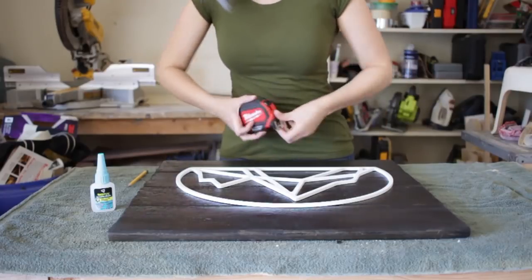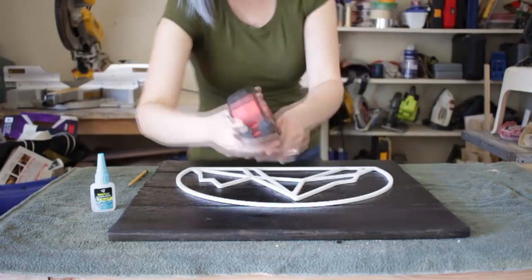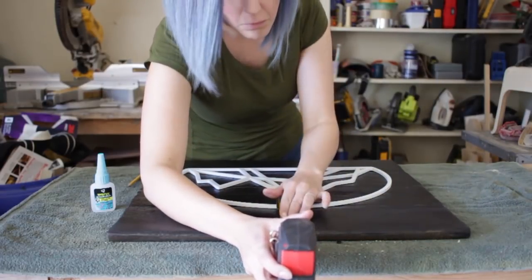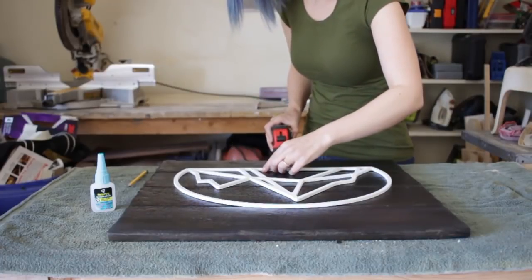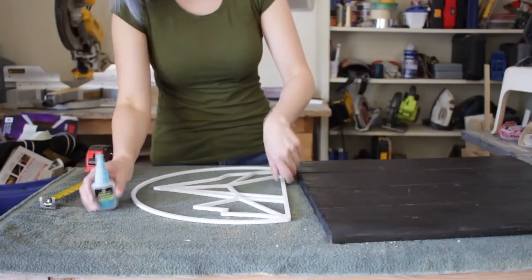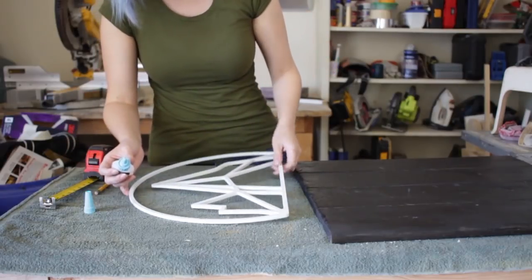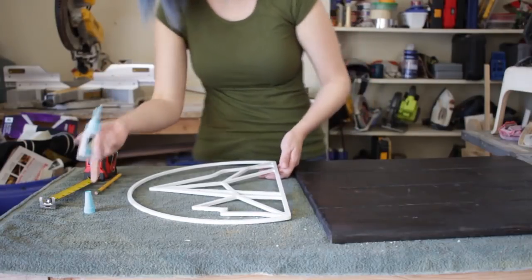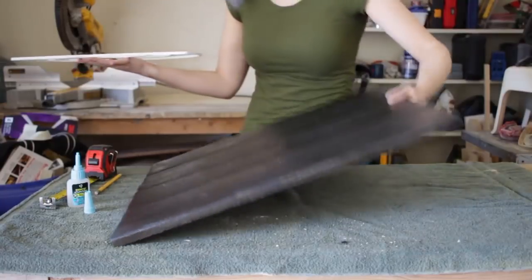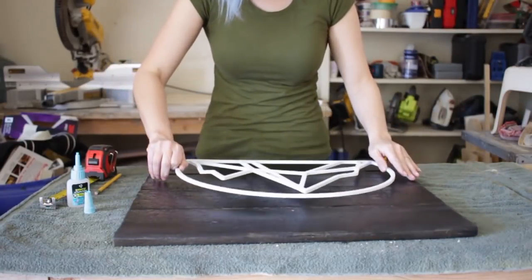With the panel flipped right side up, I started taking measurements so I could attach my mountain design. I wanted to make sure that it was in the center of the panel. I carefully applied RapidFuse all-purpose adhesive to the back of the mountain design and then placed it on top of the panel. I like RapidFuse because it dries super quickly and creates a really tight bond to almost anything.